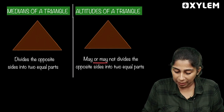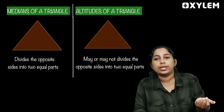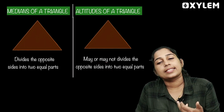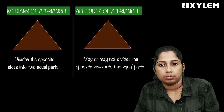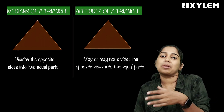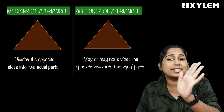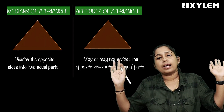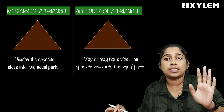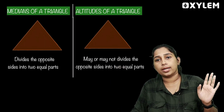Altitude may or may not divide the opposite side into equal parts. What is altitude? It meets the opposite side at 90 degrees. That is the altitude line.